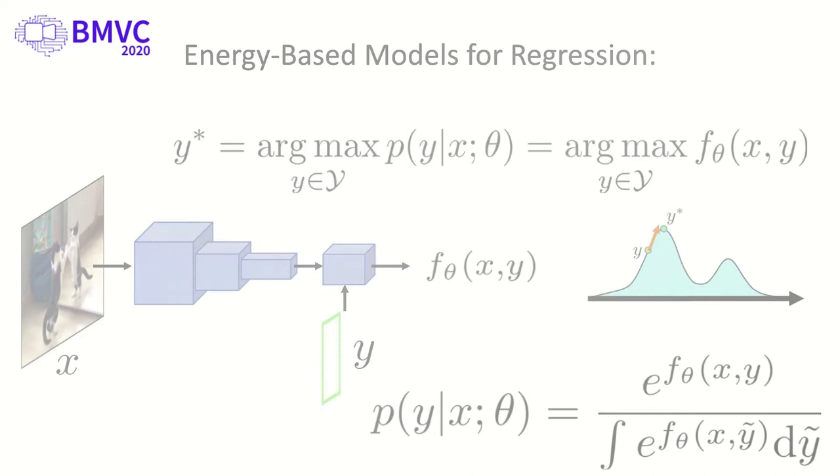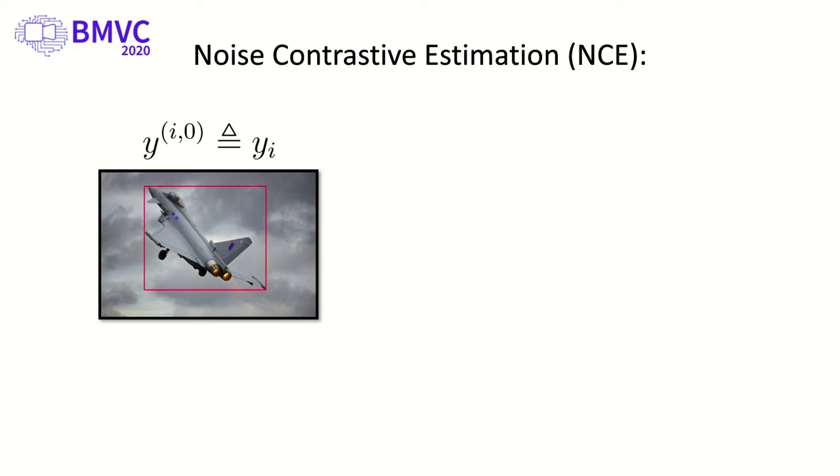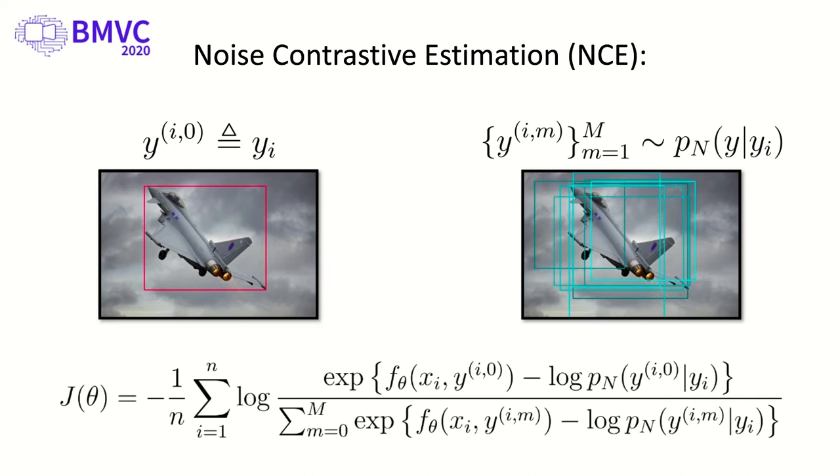In this paper, we propose a simple yet highly effective extension of noise contrastive estimation (NCE). Using NCE, an EBM is trained by learning to discriminate between the ground truth y_i and M samples from a noise distribution centered on the ground truth.